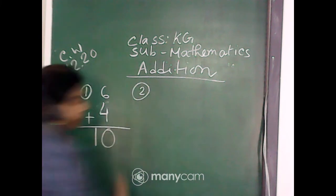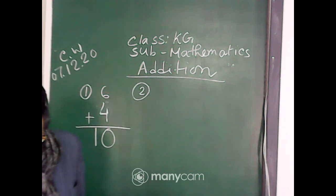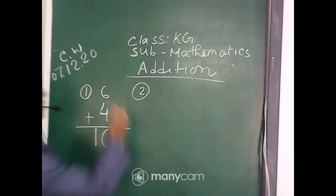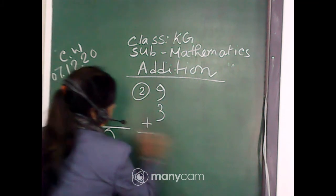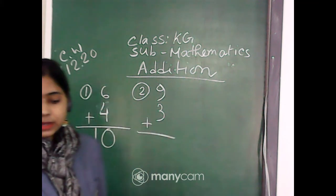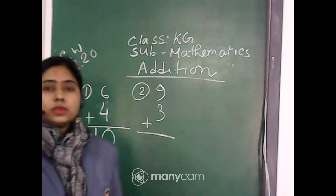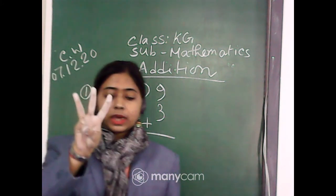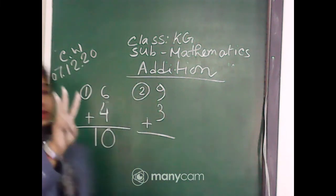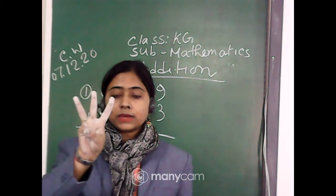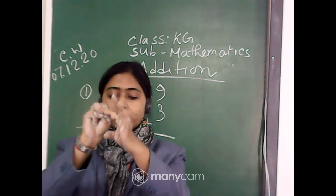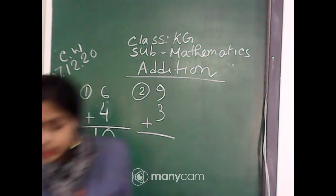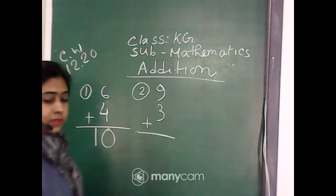Now number 2: 9 plus 3. Which one is the small number? 3. So, show me 3 on your fingers: 1, 2, 3. Now, 9 after 3 fingers: 10, 11, 12. So, 9 plus 3 is equal to 12.